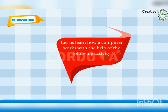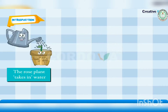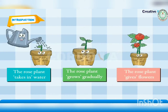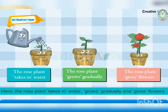Let us learn how a computer works with the help of the following activity. The rose plant takes in water, grows gradually, and gives flowers. Here the rose plant takes in water, grows gradually, and gives flowers.